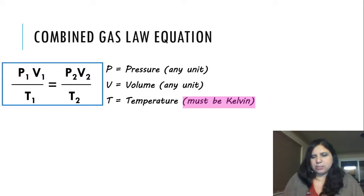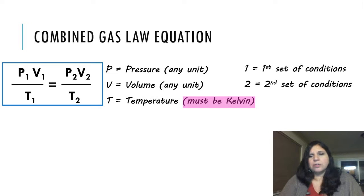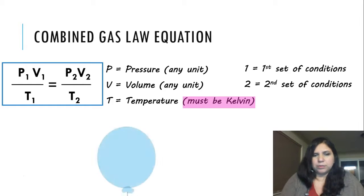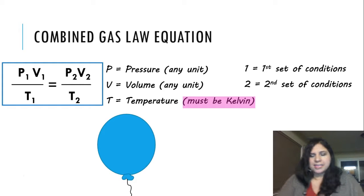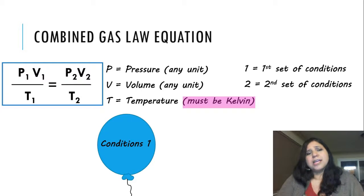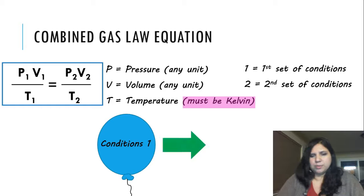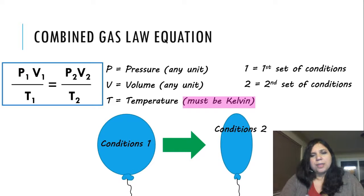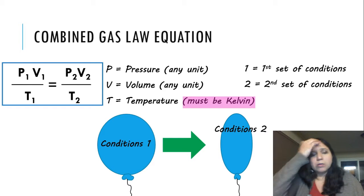The subscripts — those little ones and twos — are the conditions. We have one as our first set of conditions; notice all on the left side, those are all one set of conditions. On the right side, they're all in terms of the second set of conditions. So let's say we have a balloon in its own set of conditions — its own pressure, temperature, and volume. Then we make some changes to that balloon, putting it in a new set of conditions, and we can find out how that changes temperature or pressure.